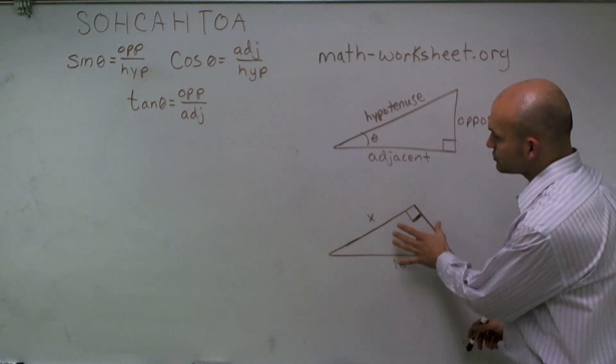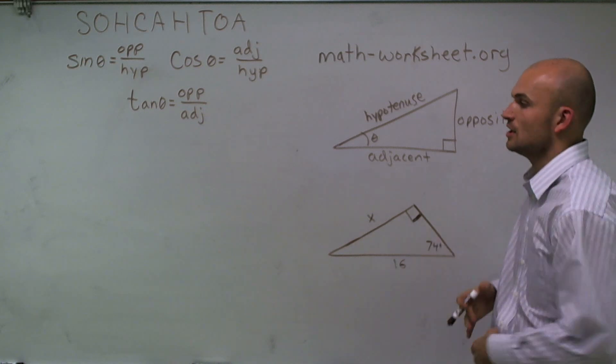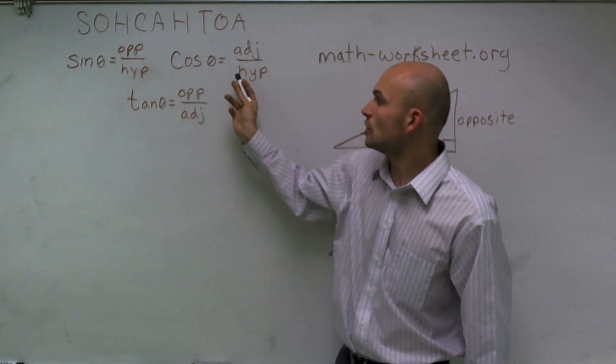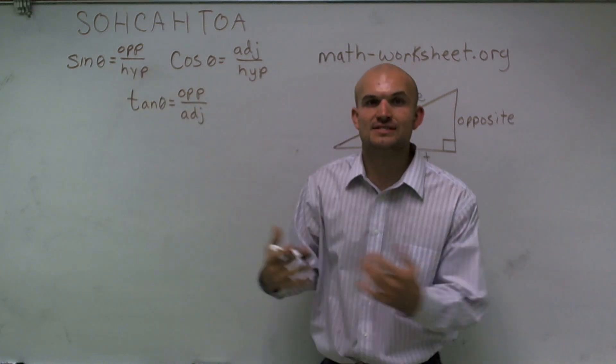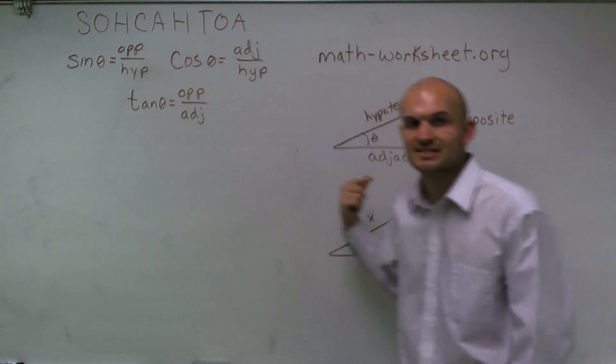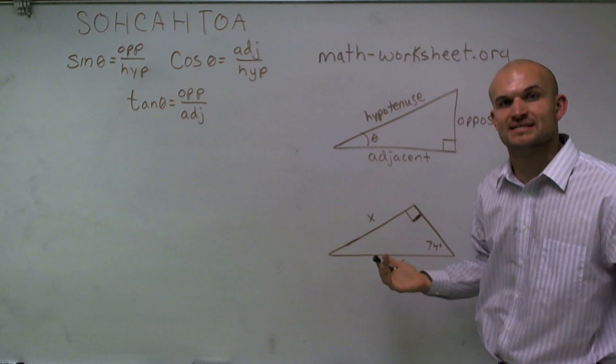To solve for a missing side length in a right triangle, we can use three functions: sine, cosine, and tangent. These are very helpful because they use the ratios of the side lengths to find either a missing angle or a missing side length.